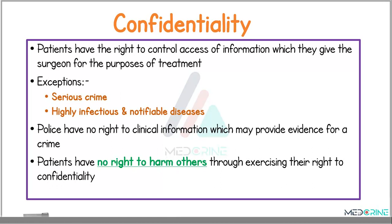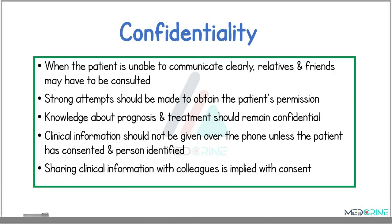Confidentiality is one of the key things that we need to put into consideration. Patients have the right to control access to any information which they give the surgeon for the purpose of treatment, except in cases of serious crime or highly infectious and notifiable diseases. Police have no right to clinical information which may provide evidence for a crime, and patients have no right to harm others through exercising their right to confidentiality. When the patient is unable to communicate clearly, family and friends may have to be consulted, and strong attempts should be made to obtain the patient's permission. Knowledge about the prognosis and treatment should remain confidential, clinical information should not be given over the phone unless the patient has consented and the person is identified, and sharing clinical information with colleagues is implied with consent.